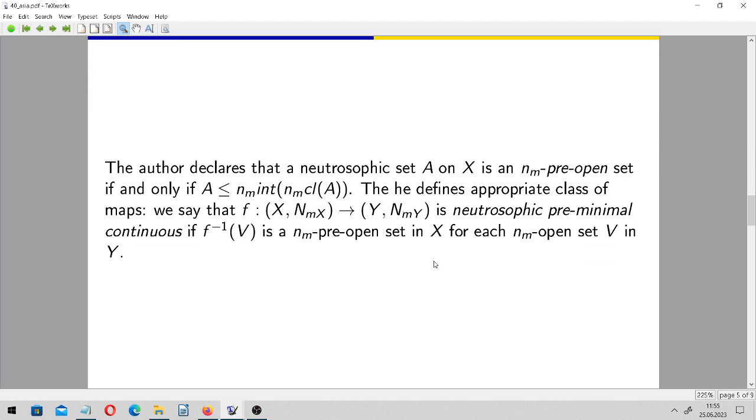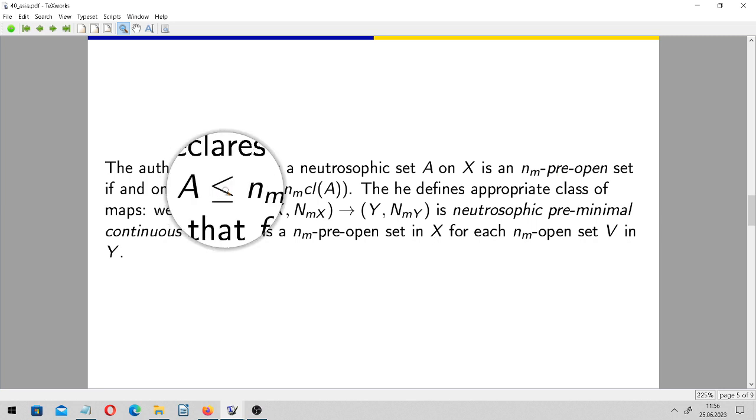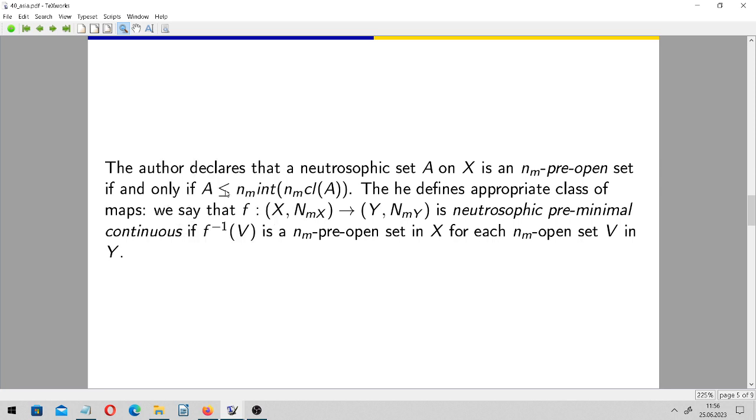And the author declares, defines that a neutrosophic set A on X is an M pre-open set, if and only if it is, well, he uses the symbol, but we may think about containment, yes, about inclusion. So it's contained in the neutrosophic minimal interior of neutrosophic minimal closure of A. Then he defines appropriate class of maps of functions. We say that a function from one neutrosophic space to the another one is neutrosophic pre-minimal continuous, if every pre-image of, as you can see, open set, neutrosophic minimal open set, is neutrosophic pre-open set.